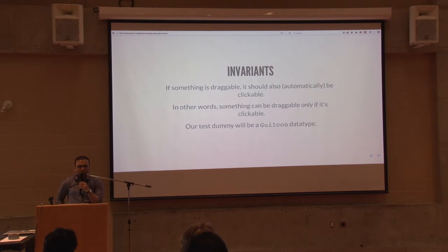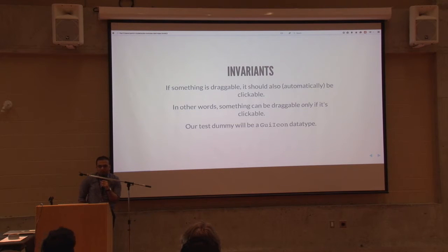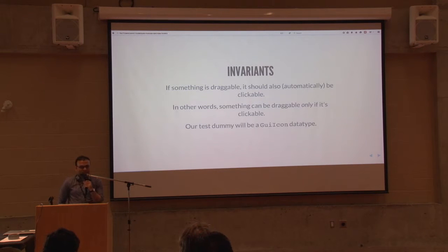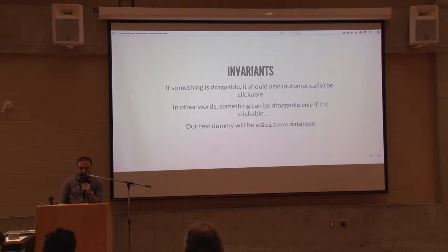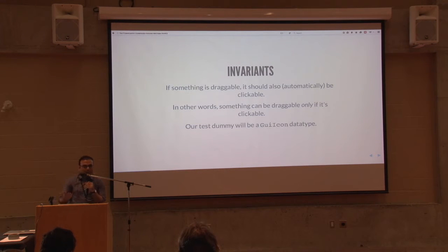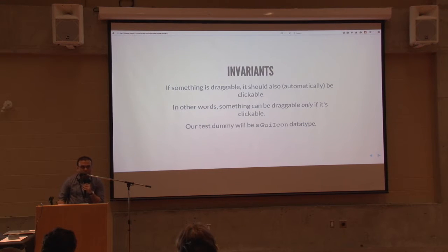Some things we find in our analysis: if something is draggable, then obviously it should be clickable — you need to click on it to drag it. We will do the implementation in terms of just a dummy data type, a GUI icon. Just think of it as an icon on your desktop. We're going to pretend we're actually doing these things, but we'll print messages on the console to show what's happening.